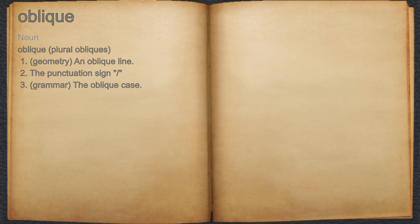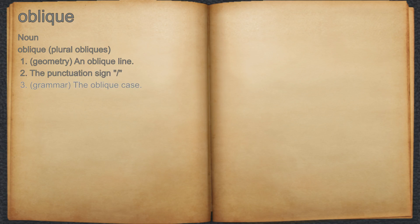Oblique. Noun. 1. Geometry, an oblique line. 2. The punctuation sign. 3. Grammar, the oblique case.